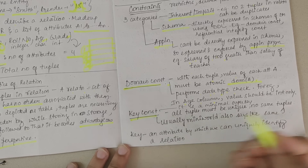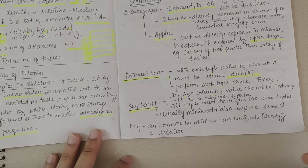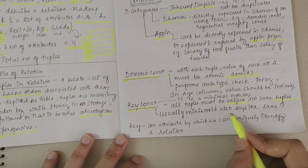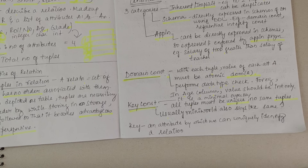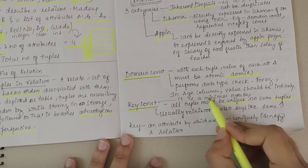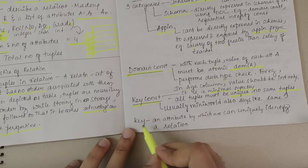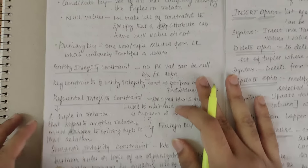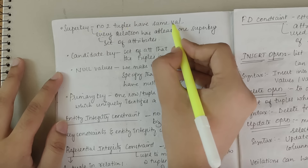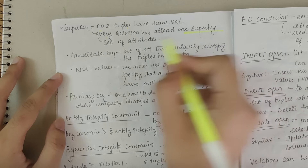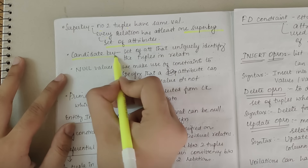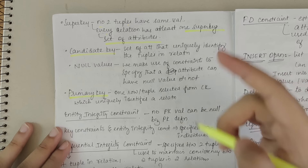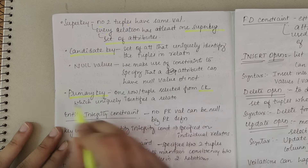Then we have key constraint. Key constraint says all tuples must be unique — no same tuple should exist. A key is an attribute by which we can uniquely identify a relation, and it is a minimal super key. Next, super key: no two tuples should have the same value, and every relation has at least one super key — it is a set of attributes. Candidate key is a set of attributes that uniquely identify the tuple in a relation. From the candidate keys, you select one as the primary key, which uniquely identifies the relation.